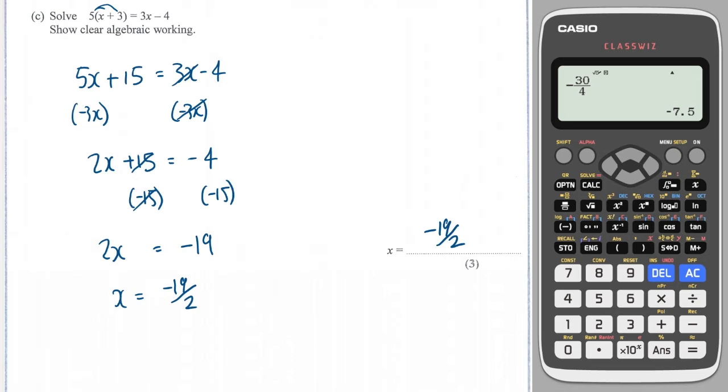Just a quick way of double-checking that you've got it correct. So you could type into a calculator, 5 lots of minus 19 over 2 plus 3, and that will give you minus 65 over 2. And then the right-hand side, you can write 3 times minus 19 over 2 minus 4, and you get the same answer on both sides, which means your solution is correct to the equation.